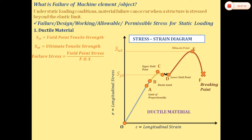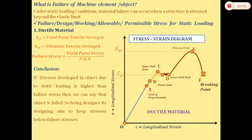If our component goes beyond 105 MPa, we say it will fail, because the factor of safety limits the stress beyond the failure stress. So the conclusion: if stresses developed due to static loading are higher than failure stress, the object is failed. As a designer, the aim is to keep stress below failure stress. This is for ductile material.